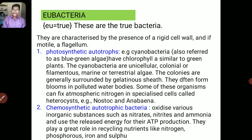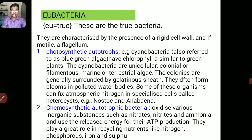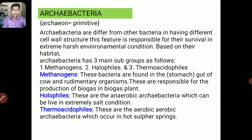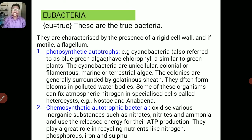Eubacteria are characterized by the presence of a rigid cell wall. If they are motile, they have a flagellum. There are two types: Photosynthetic Autotrophs and Chemosynthetic Autotrophs. The first one — Photosynthetic Autotrophs — example: Cyanobacteria. They are also known as blue-green algae. They have chlorophyll similar to green plants. Cyanobacteria are unicellular — they have a single cell. They may be colonial or filamentous.